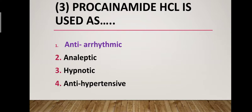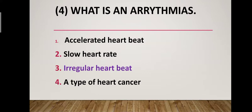Question number three: Procainamide hydrochloride is used as what? Option one: antiarrhythmic drug. Option two: analeptic drug. Option three: hypnotic drug. Option four: antihypertensive drug. The correct answer is option one — antiarrhythmic drug. Procainamide HCl is used as an antiarrhythmic drug.